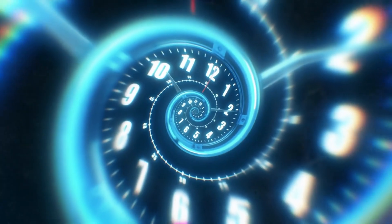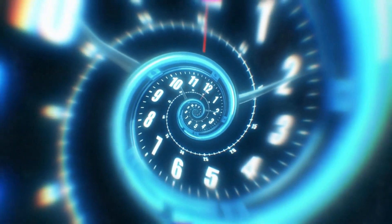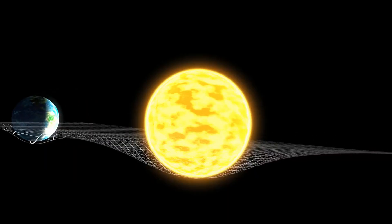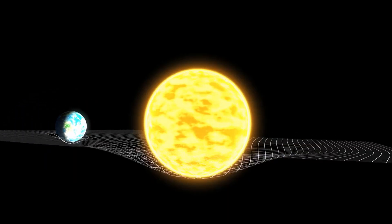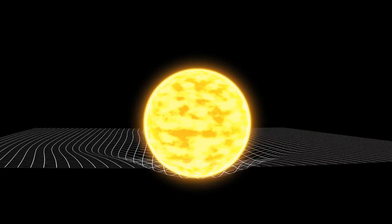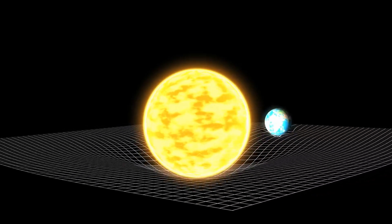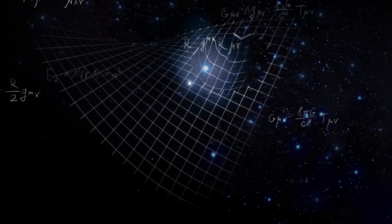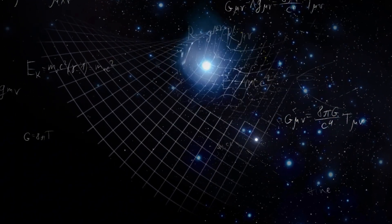In order to understand Kaluza-Klein theory, we need to go back to the early 20th century. Einstein had just published his general theory of relativity, showing that gravity isn't really a force. It's the curvature of space-time caused by mass and energy.